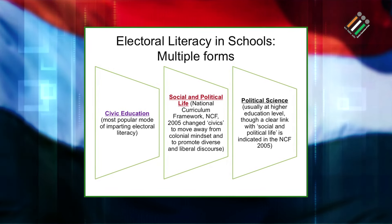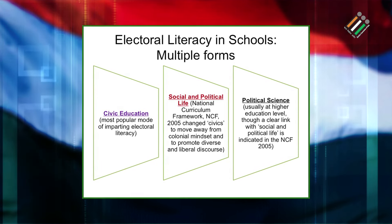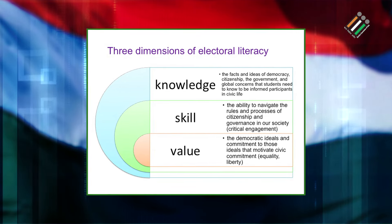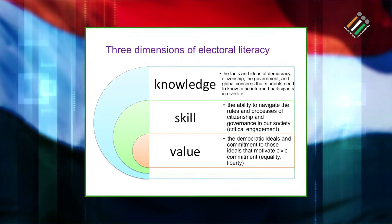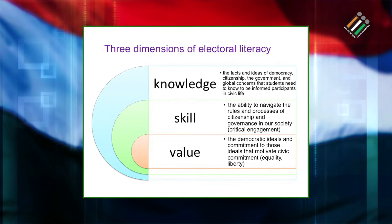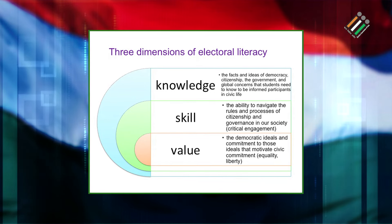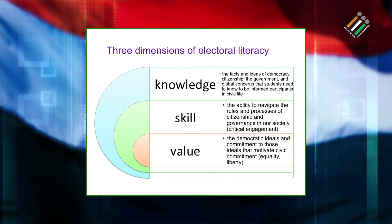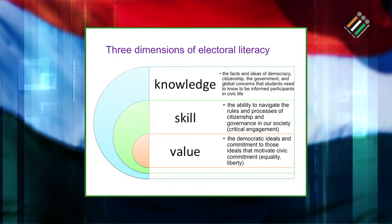That means we are talking about a child of around 16 years old. There are three dimensions of electoral literacy in the context of schools. First is knowledge — the facts and ideas about democracy, citizenship, government, and global concerns that students need to know to be informed participants and to engage in civic, social and political life. Second is skill — the ability to navigate the rules and processes of citizenship and governance, a kind of critical engagement.